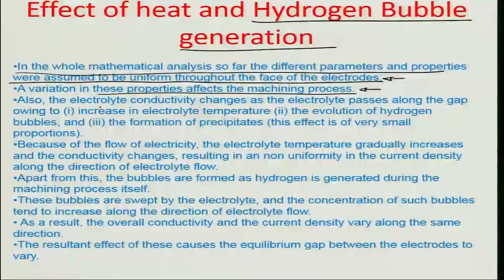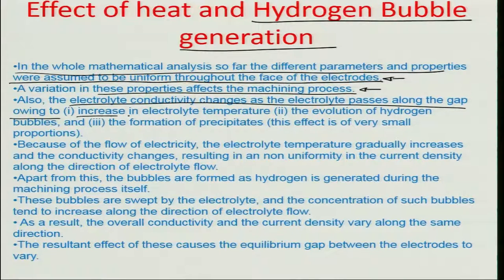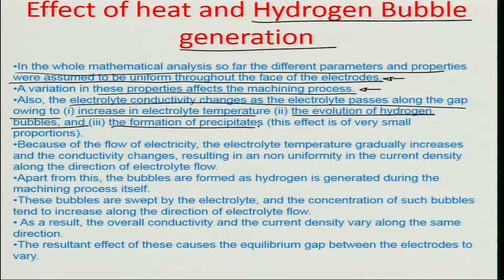The electrolyte conductivity changes as the electrolyte passes along the gap, owing to an increase in the electrolyte temperature, the evolution of hydrogen bubbles, and the formation of precipitates. This effect is very small in proportion compared to hydrogen — hydrogen changes conductivity quite a lot.